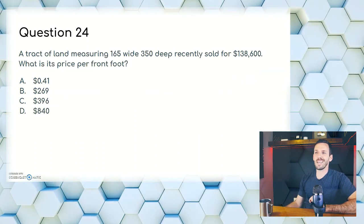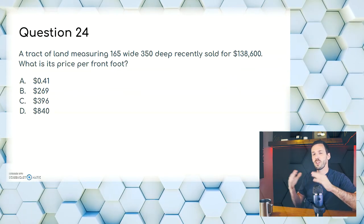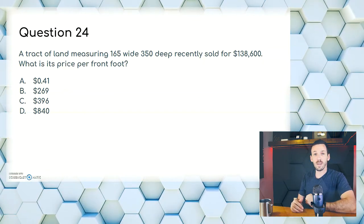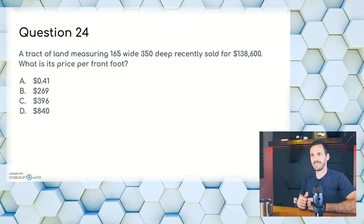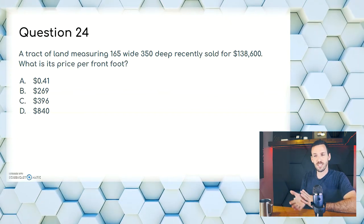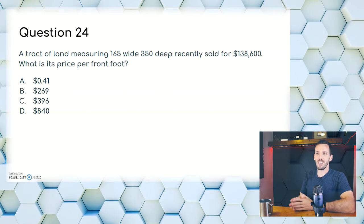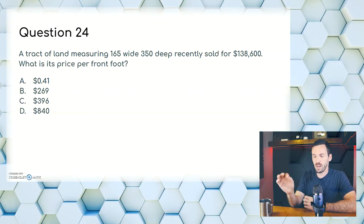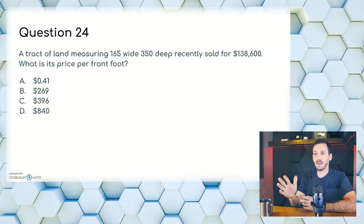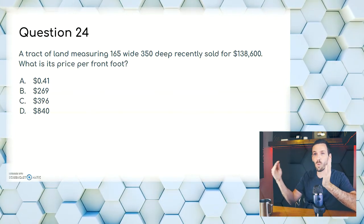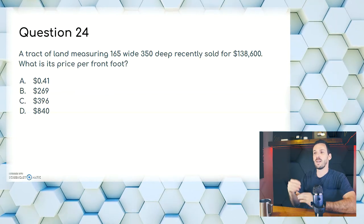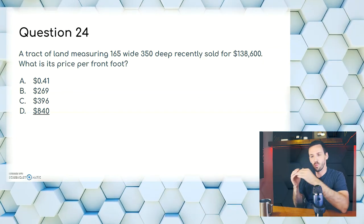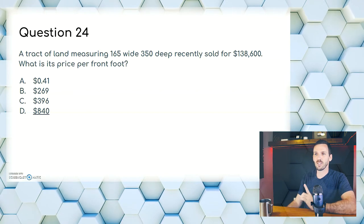Question twenty-four: a tract of land measuring 165 feet wide and 350 feet deep recently sold for $138,600. What is the price per front foot? A, $0.41; B, $269; C, $396; or D, $840. They trick you here by giving you too much information — they do that a lot on math problems. Just take $138,600 and divide it by the 165 feet wide, because that is the front foot, to get $840. We don't care about the depth here. Answer is D, $840.